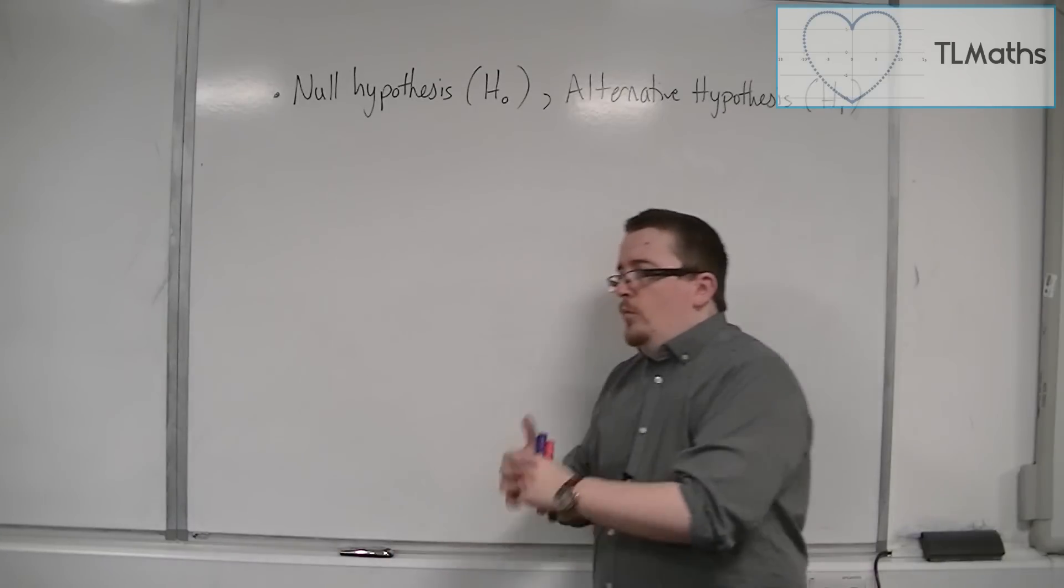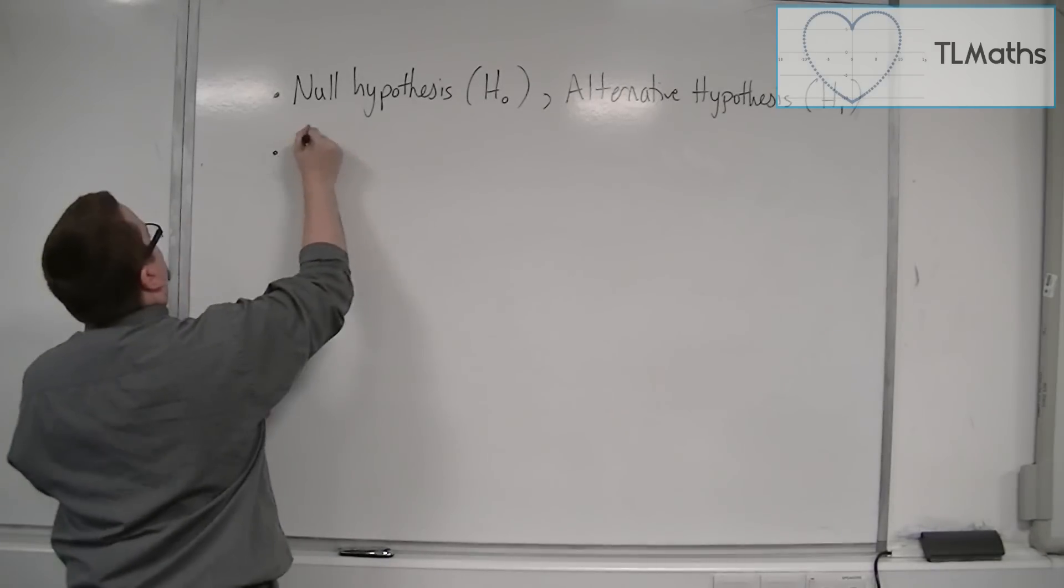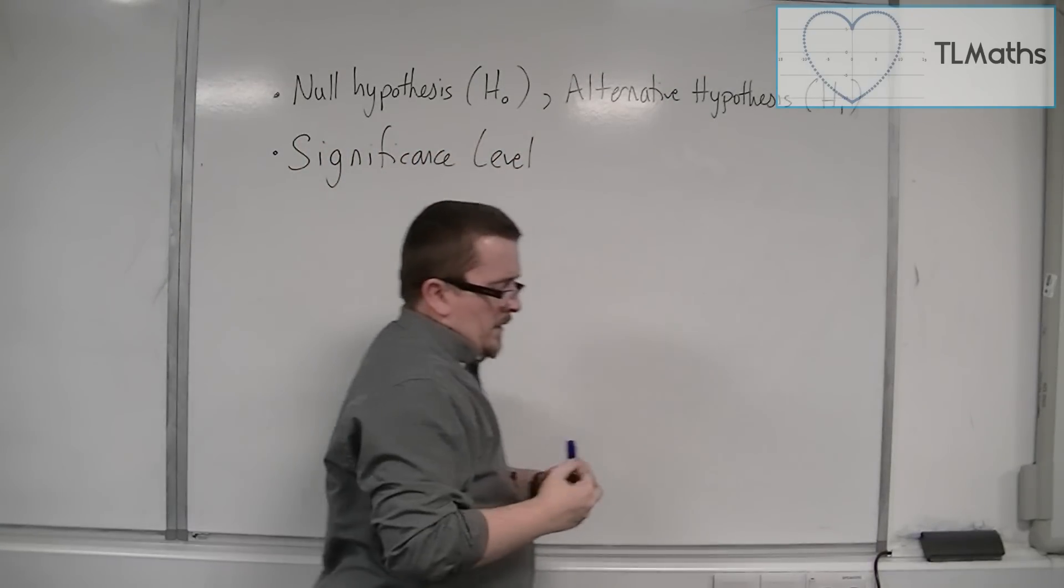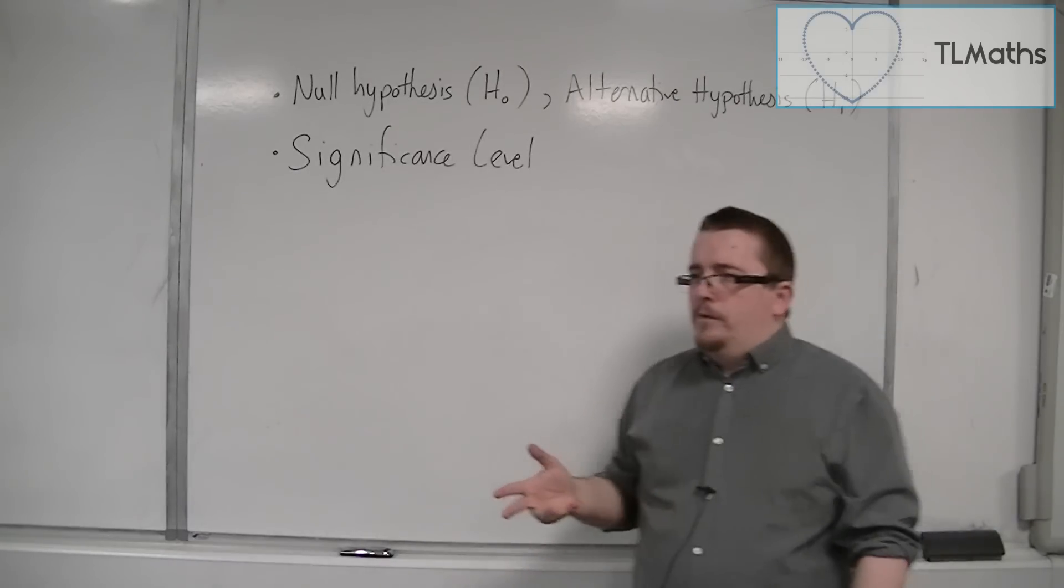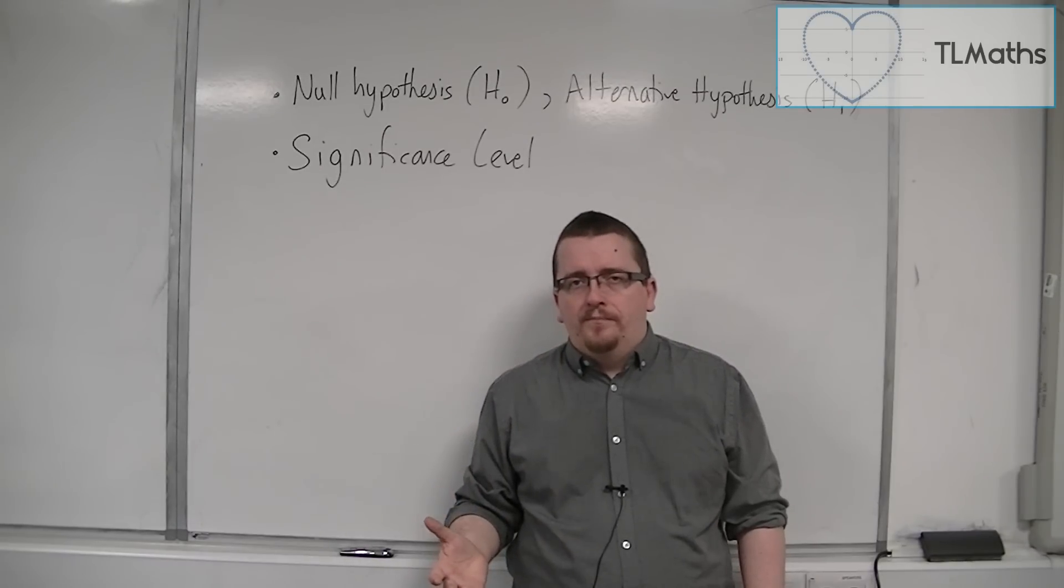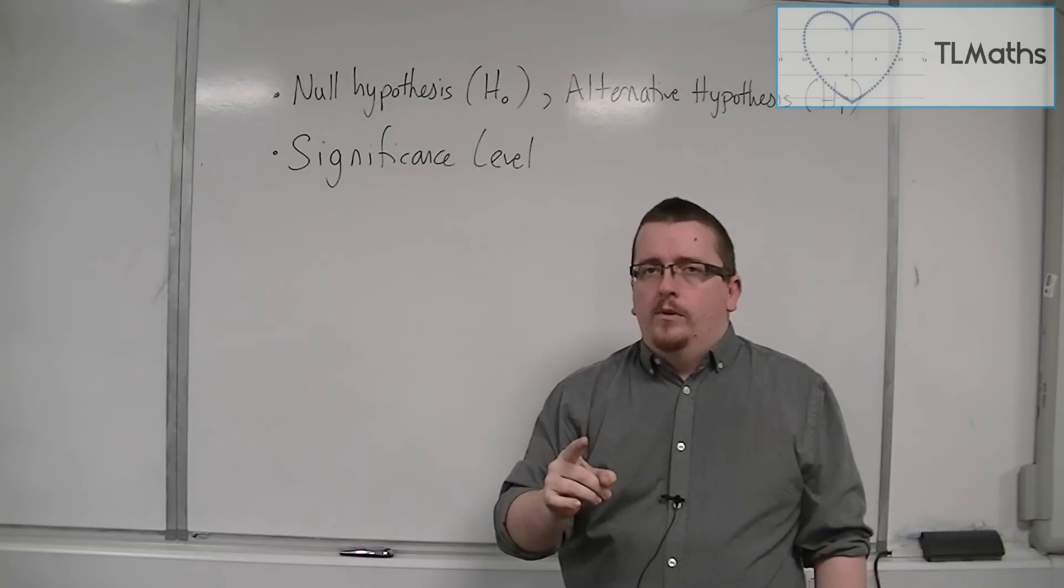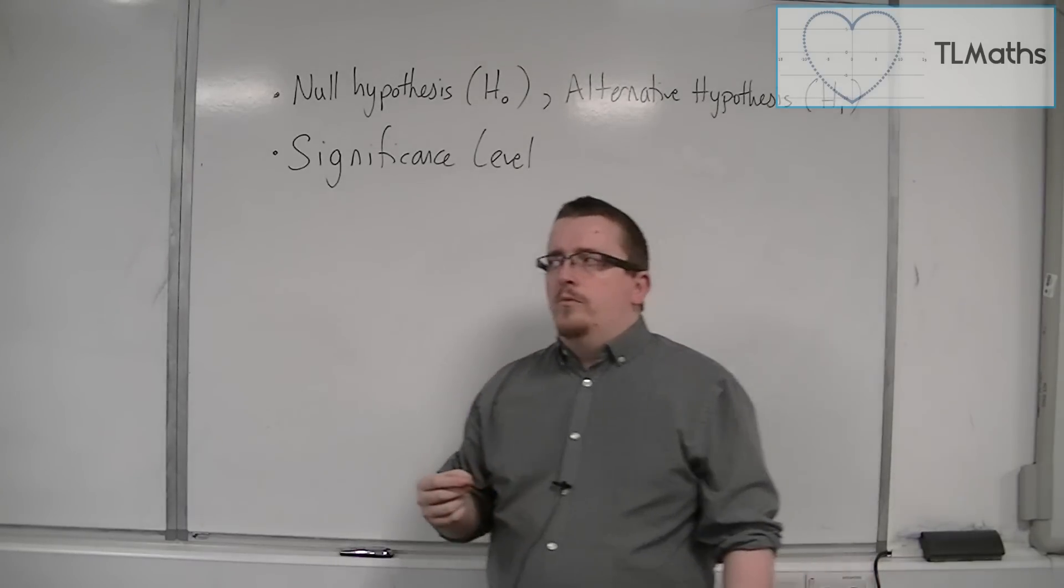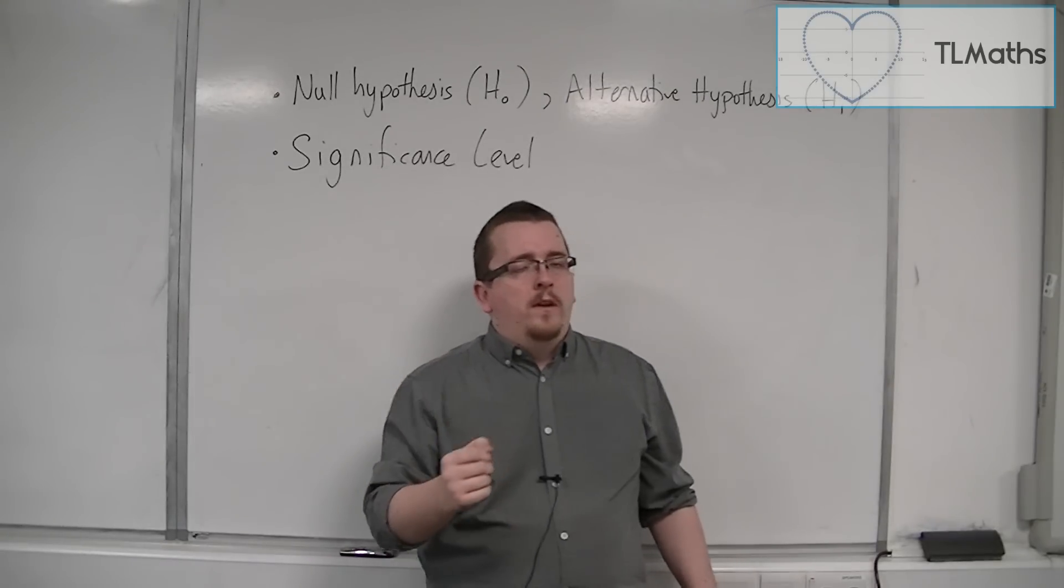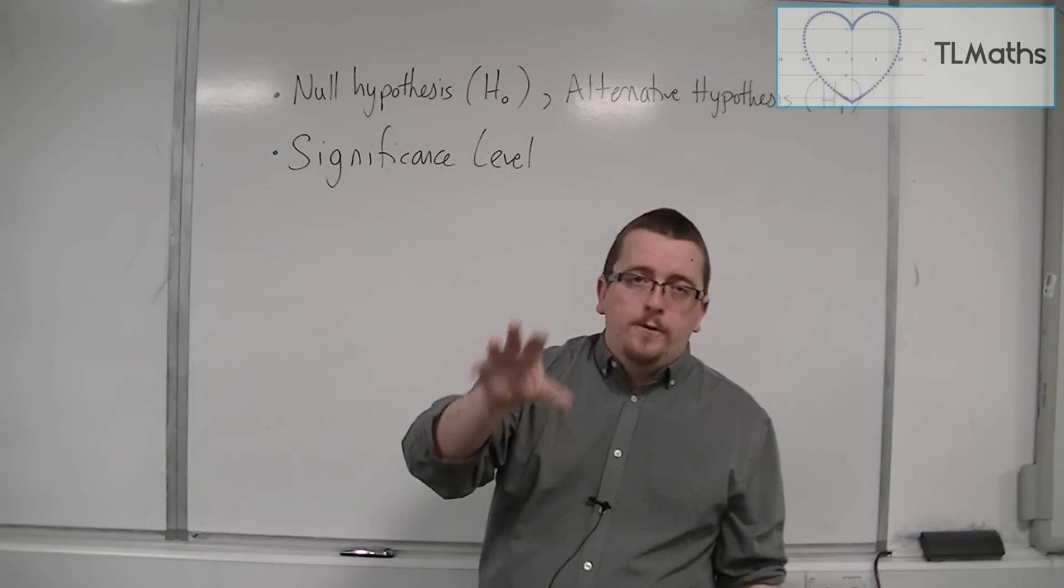So we then need to decide on what is called a significance level. The significance level is actually very important. Now, if we take that example of flipping the coin a thousand times, how many times do I have to get heads to convince you that the coin is biased? Do I need to get 600 heads out of the thousand? Or 750? Or 800? Or 900? Would 950 heads convince you that the coin is biased?